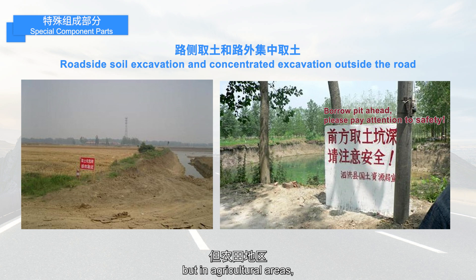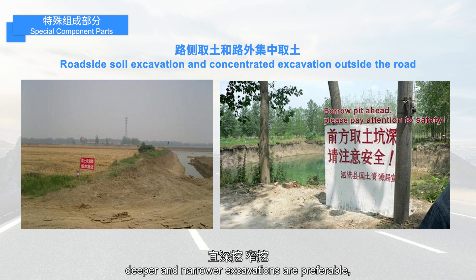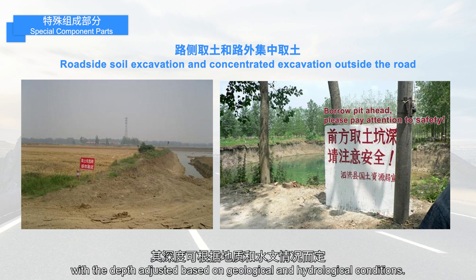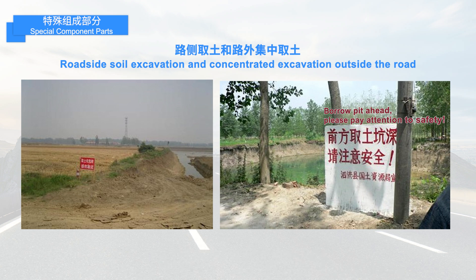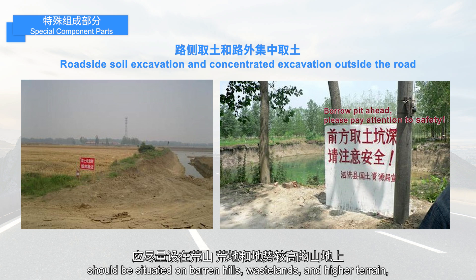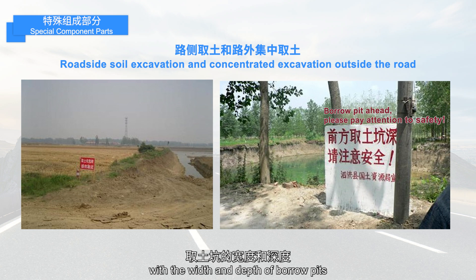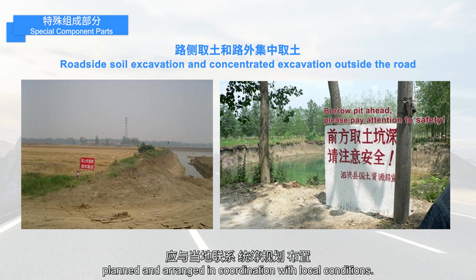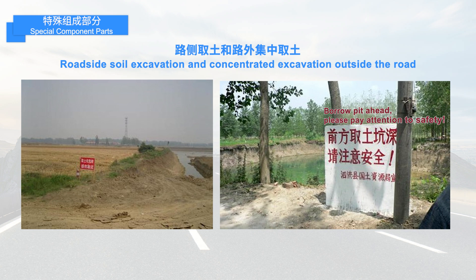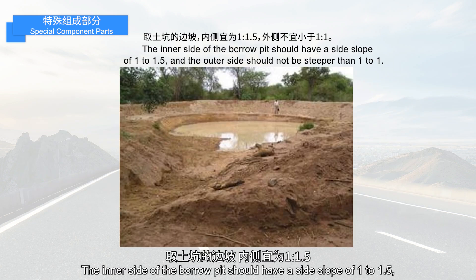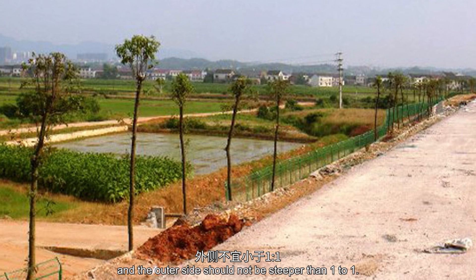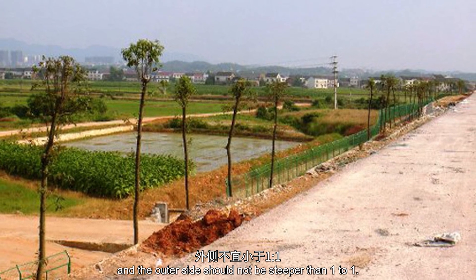But in agricultural areas, to minimize the occupation of farmland, deeper and narrower excavations are preferable, with the depth adjusted based on geological and hydrological conditions. Concentrated excavation outside the road should be situated on barren hills, wastelands, and higher terrain, with the width and depth of borrow pits planned and arranged in coordination with local conditions. The inner side of the borrow pit should have a side slope of 1 to 1.5, and the outer side should not be steeper than 1 to 1.